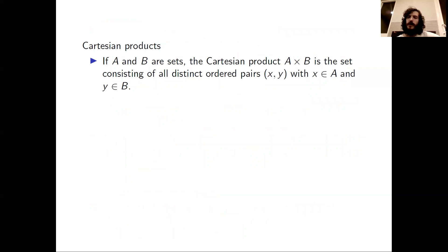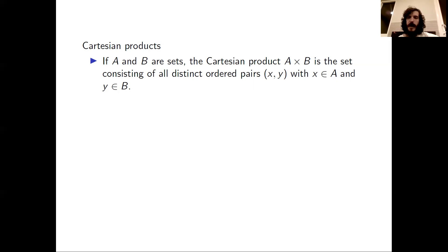Let's consider one last operation on sets. The Cartesian product of sets A and B, which we denote as A times B, is the set consisting of all distinct ordered pairs (X, Y) for which X is an element of A and Y is an element of B.